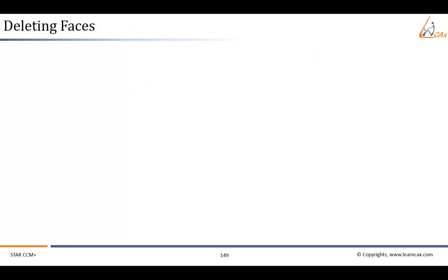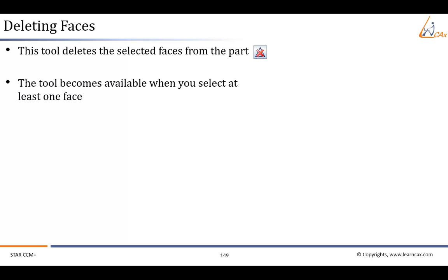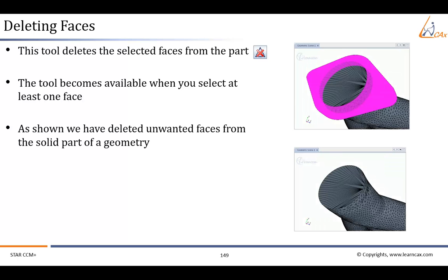Finally, we delete unwanted faces. This tool deletes the selected faces from the part. The tool becomes available when you select at least one face. The following example demonstrates deleting unwanted faces from the solid part of a geometry.